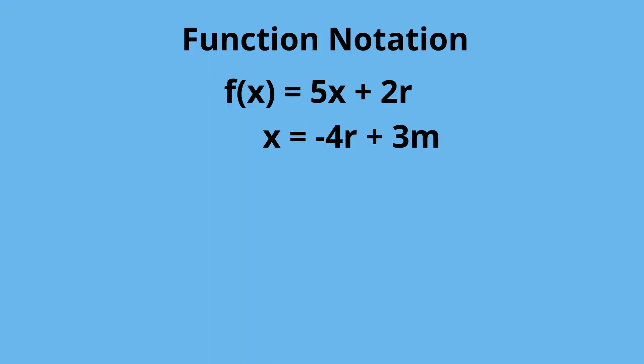Again, you just substitute in the negative 4r plus 3m for x. So you get f of negative 4r plus 3m equals 5 and then in parenthesis negative 4r plus 3m plus 2r.